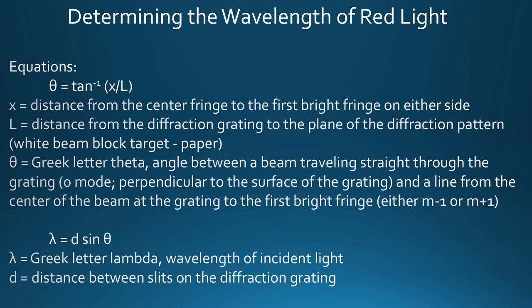The L distance from the diffraction grating to the plane or the target was 75 millimeters. Now we need to find theta or the angle between a beam traveling straight through and perpendicular to the line and from the center of the beam at the grating to the first bright fringe. We had one of those pictures.